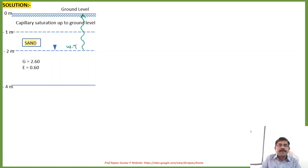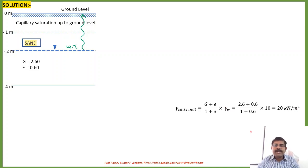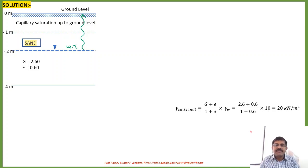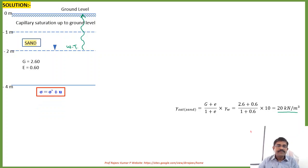We need to calculate the saturated unit weight of soil. Since it is a sandy soil, the soil is saturated both above and below the water table. You can calculate it using the expression: (G + e) / (1 + e) × γw, which gives 20 kN/m³ as the saturated unit weight for this sand.